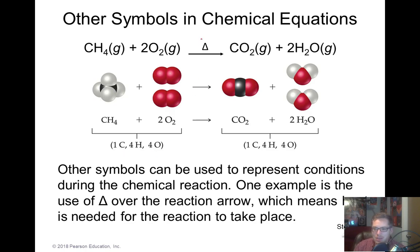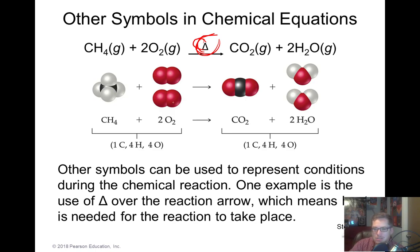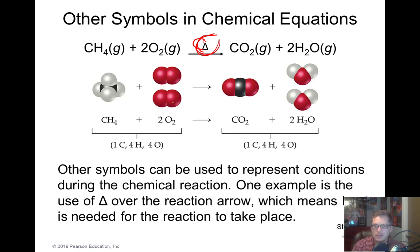Also, the delta symbol above the reaction arrow means a change in heat — specifically that heat is needed for the reaction to take place. For example, methane will burn in oxygen and create a warm flame, but in order to get it started you have to give it some sort of spark or heat. We represent that by putting the delta sign above the reaction arrow.